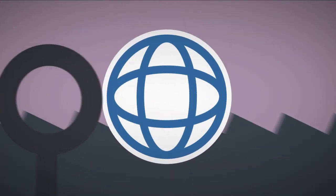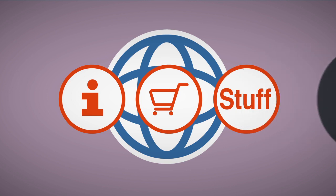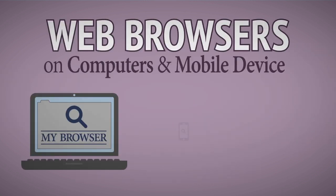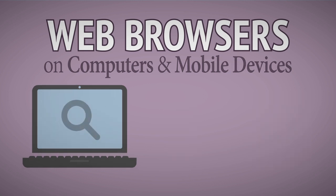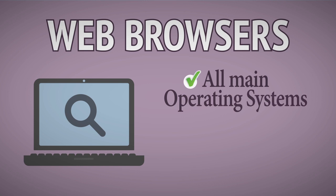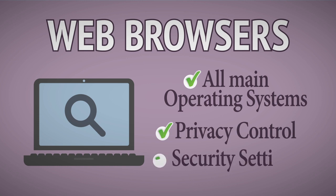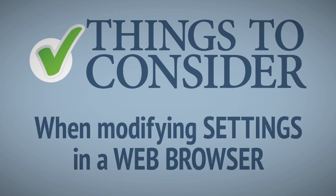Browsing and searching the web for information, products and a multitude of other things is made easier by the web browser we choose for our computers, mobile and connected devices. Web browsers are available for all mainstream operating systems and increasingly offer a good level of control over the privacy and security settings we prefer when we're online. Here are some key things to consider when modifying your settings in a web browser.